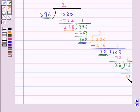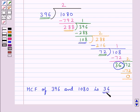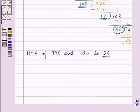Now we have got the remainder as 0 so we will stop here and the last divisor that is 36 is the required HCF of the given numbers. So HCF of 396 and 1080 is 36.